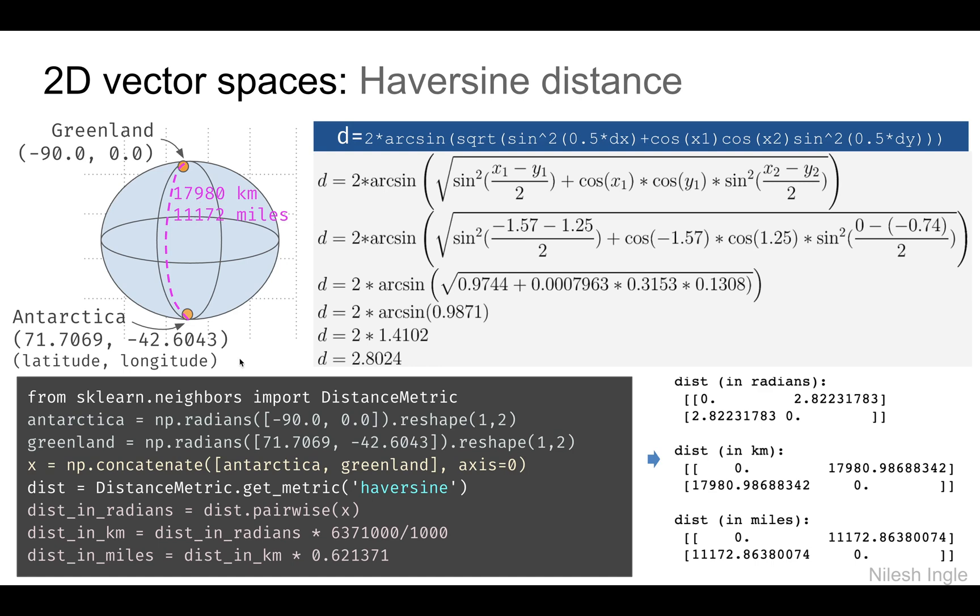Down here in the box we have the code for calculating the distance. When we create the variable dist, we need to specify haversine in the get_metric method that we call.